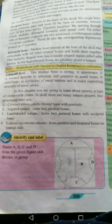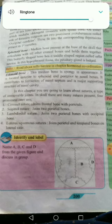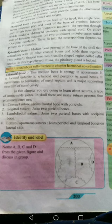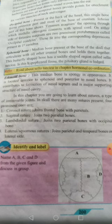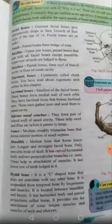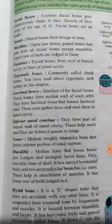To summarize: the coronal suture joins the frontal bone with the parietals; the sagittal suture joins the two parietal bones; the lambdoidal suture joins the two parietal bones with the occipital bone; and the lateral/squamous suture joins the parietal and temporal bones on the lateral side. A diagram is given — identify and label points A, B, C, D from the figure and discuss in the group.